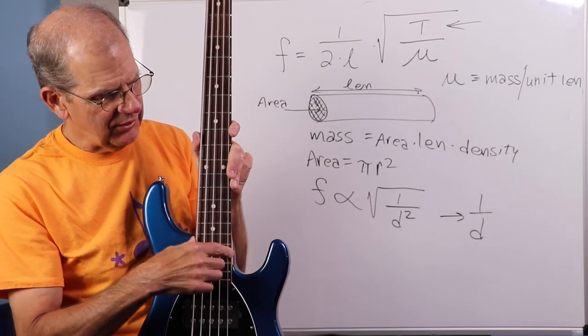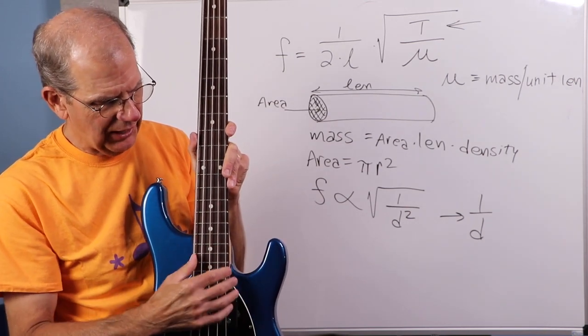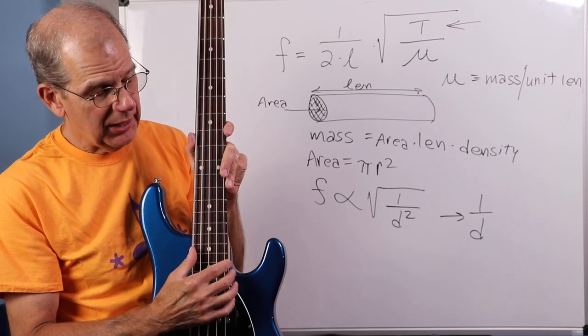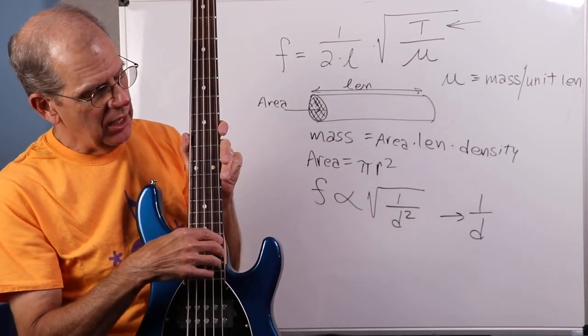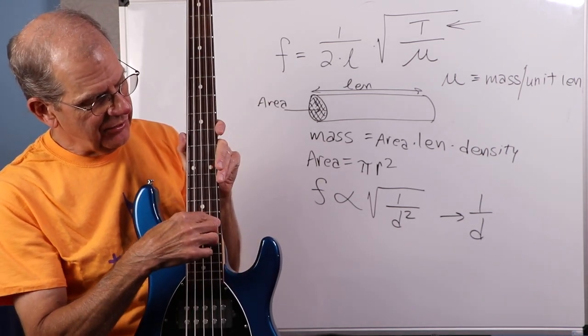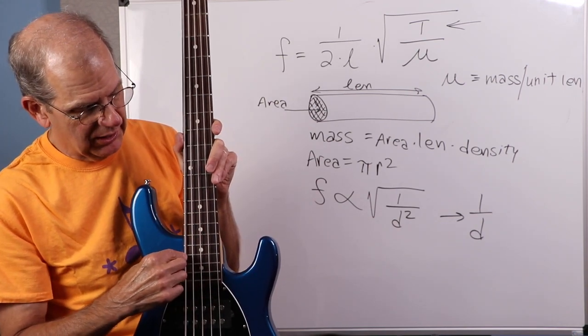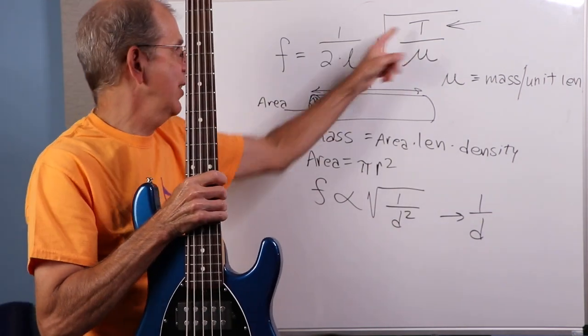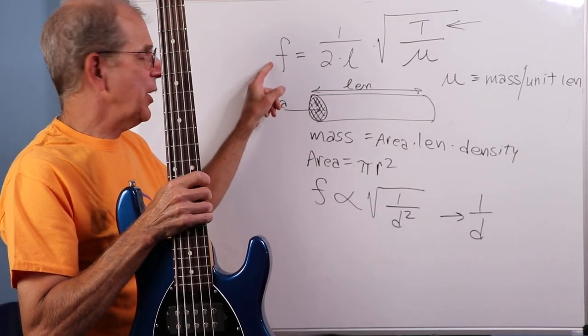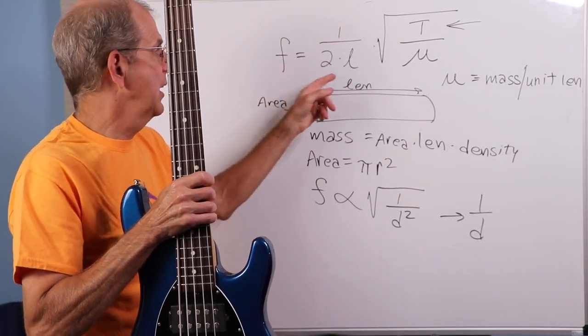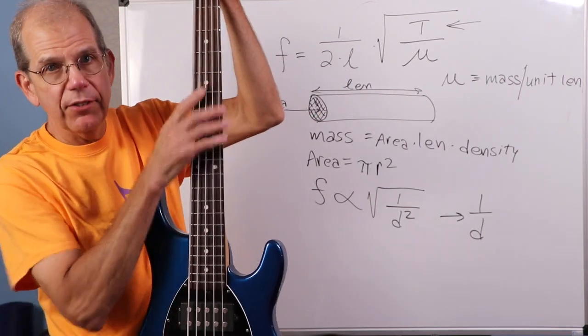Now, I alluded to this in a preceding video. There's really two things going on here. Number one is the playability of the instrument. If I have vastly different tensions on those strings, they're going to feel different under my fingers. Some of them are going to feel tight. Some of them are going to feel kind of loose and sloppy. So, to keep that consistent, I want the tensions to be the same.